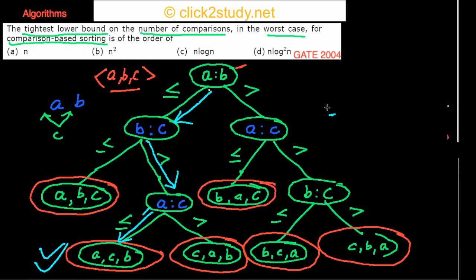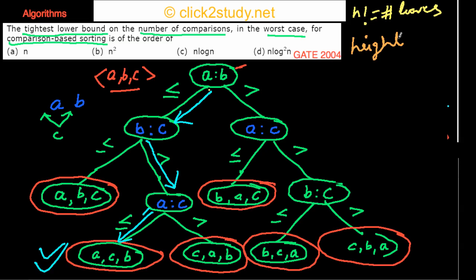With this in mind, we can prove the tightest lower bound on the number of comparisons in the worst case. There are n! permutations, which equals the number of leaves in the decision tree. In the worst case, you traverse the longest path possible, which is the height h of the tree.